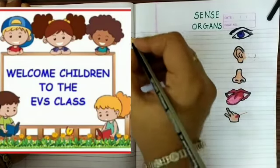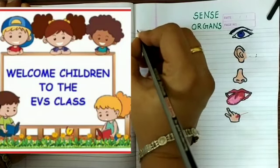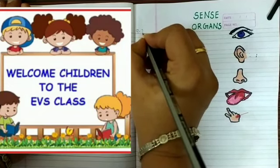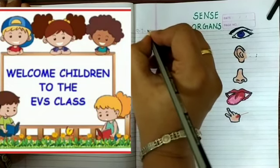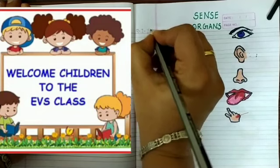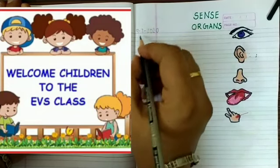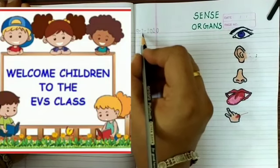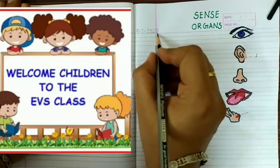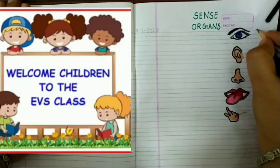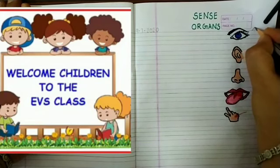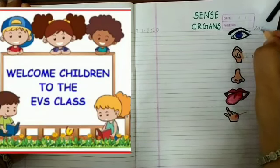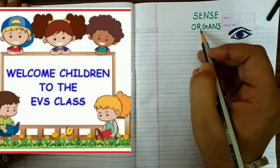First of all, write down the date: 9 July 2020. And you have to write here C.W. Our topic name is Sense Organs.